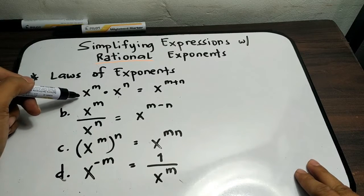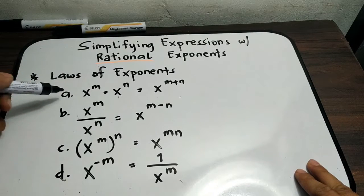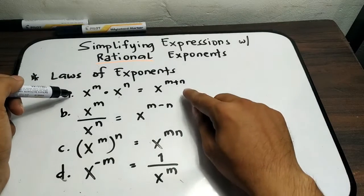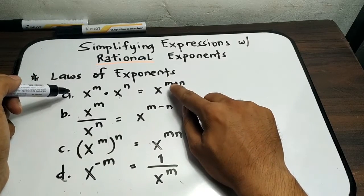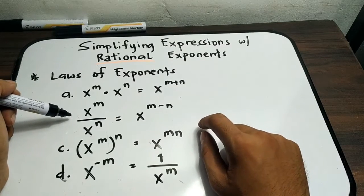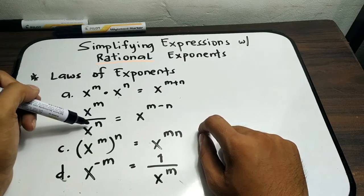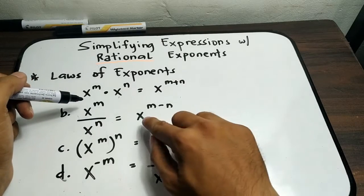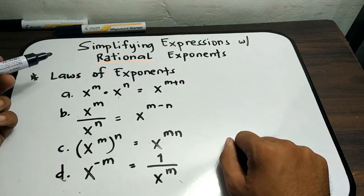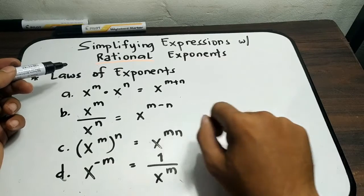We have x raised to m times x raised to n. In this law, since the bases are the same, you just need to add the exponents. For the second law, we have x raised to m all over x raised to n, which equals x raised to m minus n — all you need to do is subtract the exponents.